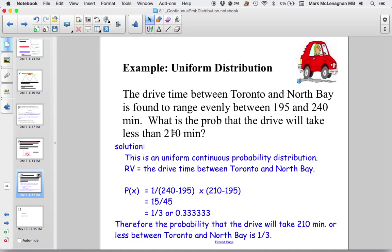The probability is 1 over the interval, the main interval between 195 and 240, times 210 minus 195, the value that we're concerned about. Since this is less than, we keep all the values below that value. This is equal to 15, this is equal to 45. So we multiply and get 15 over 45, which is one-third, or 0.33. Therefore, the probability that the drive will take 210 minutes or less between Toronto and North Bay is one-third.